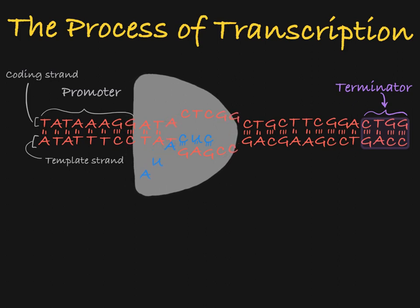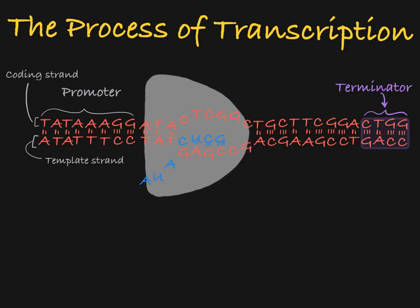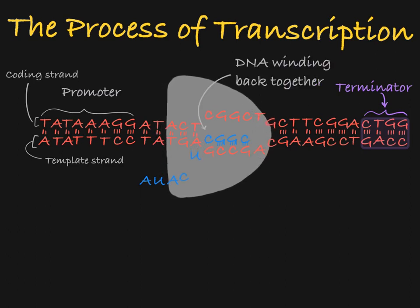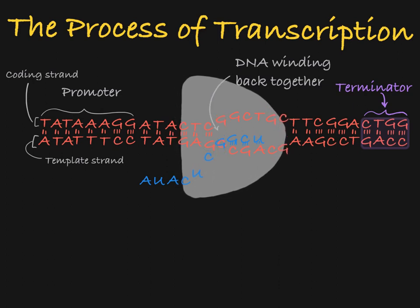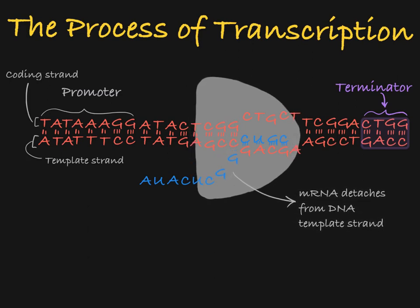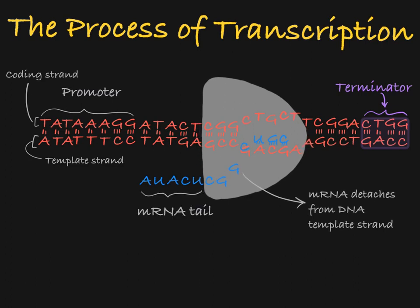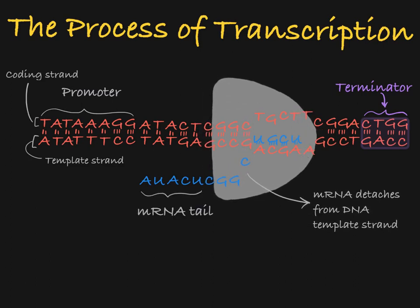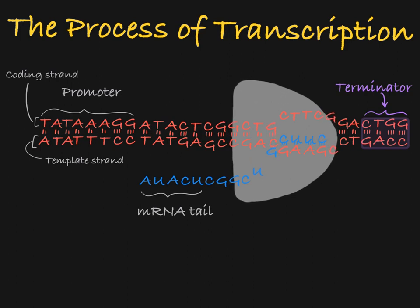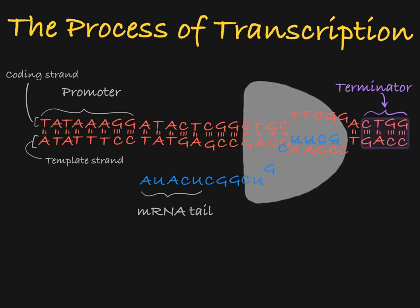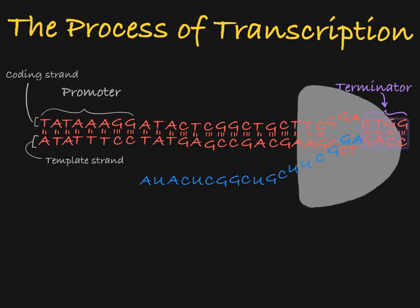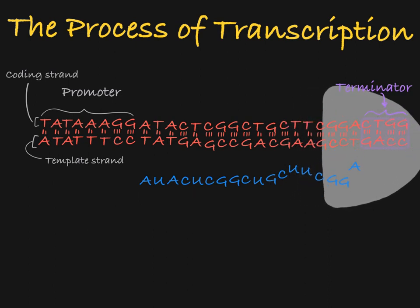As the RNA polymerase moves along the gene, the transcription bubble will remain the same size, meaning that the DNA that has already been built onto will need to wind back together. The newly built mRNA will begin to detach from the DNA toward the back of the transcription bubble. As the RNA polymerase moves down the gene, an mRNA tail will start to trail the bubble, getting longer and longer as transcription continues. When the RNA polymerase reaches the end of the transcription unit, it will run into the terminator sequence of the gene. This sequence of DNA causes the RNA polymerase to detach from the DNA, and the remaining transcription bubble winds back together.